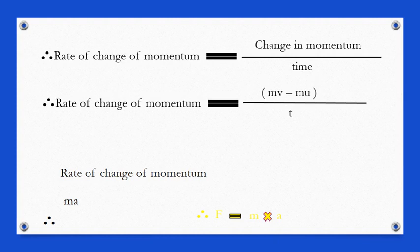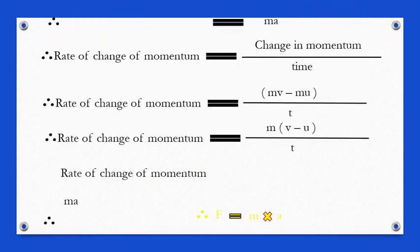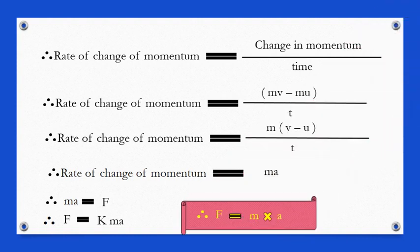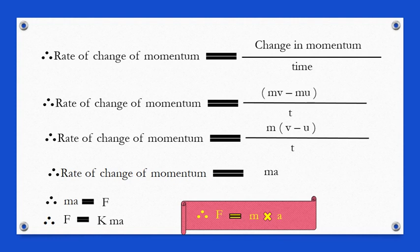The rate of change of momentum equals the change in momentum divided by time. Therefore, rate of change of momentum equals MV minus MU, all divided by T. Here M is the mass, U is the initial velocity, V is the final velocity, and T is the time. Finally we get rate of change of momentum equals M into A, because V minus U upon T is nothing but acceleration. So F equals MA, and more generally F equals K into MA where K is a constant, giving us the final statement F equals M into A.